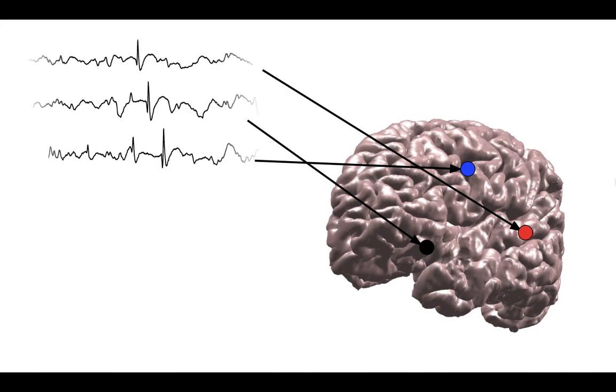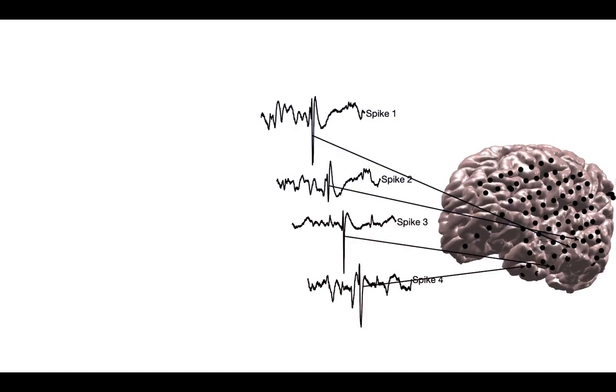In our study, we rigorously mapped out these different spike clusters. We looked at a group of 20 patients who underwent intracranial EEG monitoring. We first used an automatic spike detector to detect spikes.